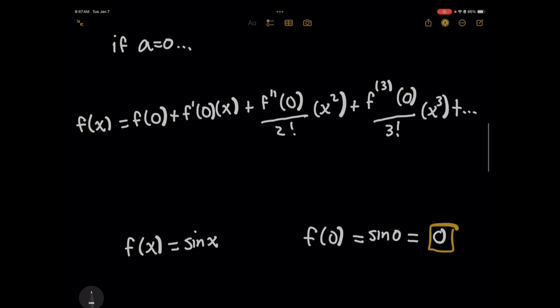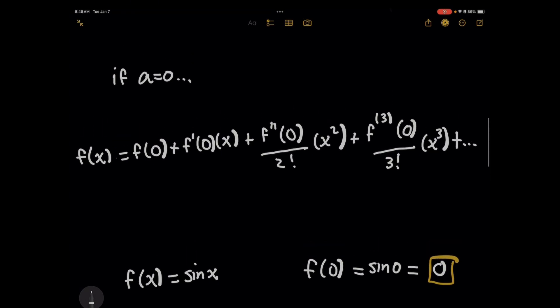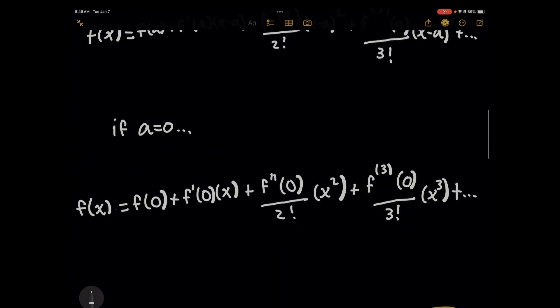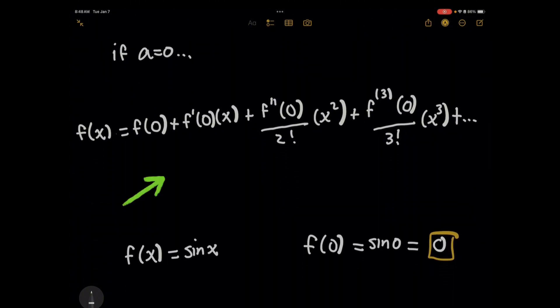Okay, so the nice thing about a equals zero is this really simplifies the Taylor series notation above quite a bit. Everywhere you see an a, if you plug in a zero, now we get this simplified expression, right? You've got f of zero plus the first derivative function, which is f prime, evaluated at zero times simply x plus f double prime of zero times x squared all over two factorial and so on.